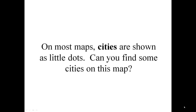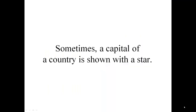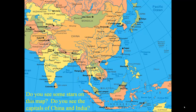On most maps, cities are shown as little dots. Can you find some cities on this map? Sometimes a capital of a country is shown with a star. Do you see some stars on this map? Do you see the capitals of China and India?